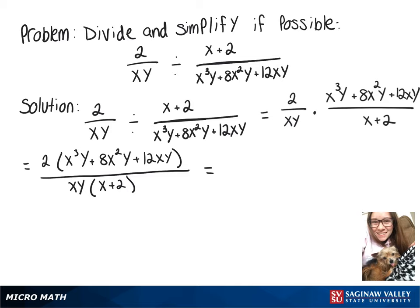On top, we still have our 2 and then we can factor out an xy leaving x squared plus 8x plus 12, and on bottom we still have xy times x plus 2.